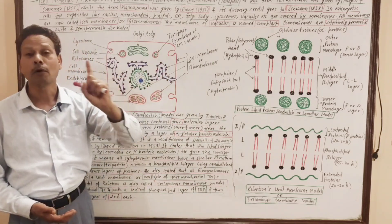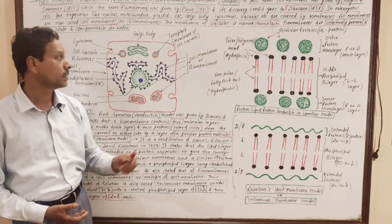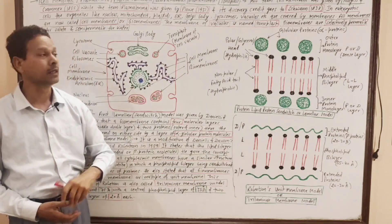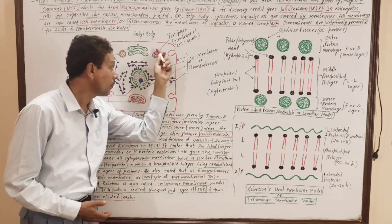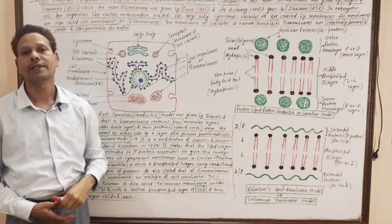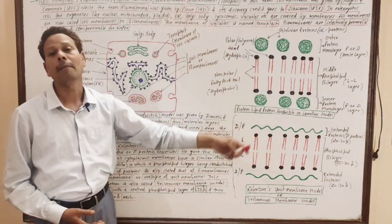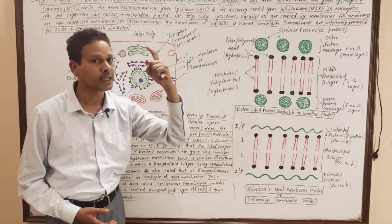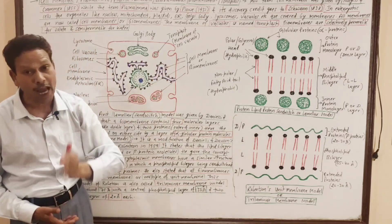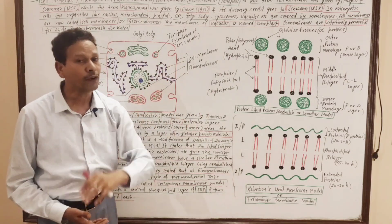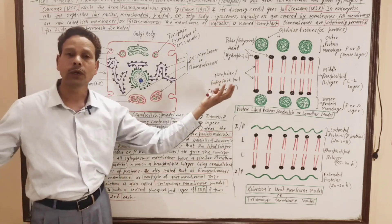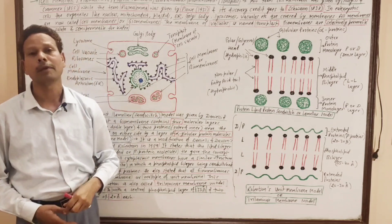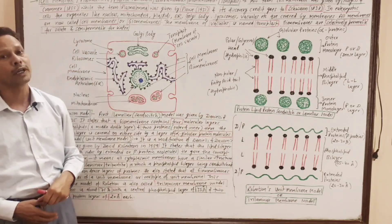Note down — this is an important question for competitive exams. The membrane surrounding cell vacuoles is called the tonoplast. These cell membranes and biomembranes are selectively and differentially permeable for solute substances, but the cell membrane is semi-permeable for the solvent, i.e., water.